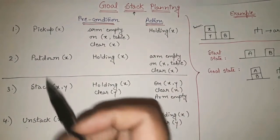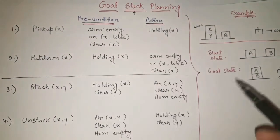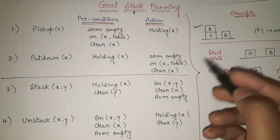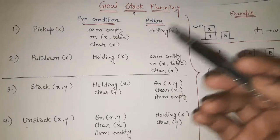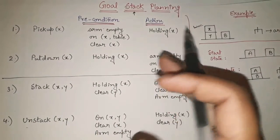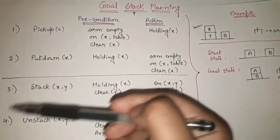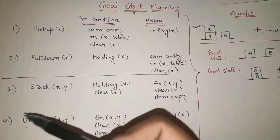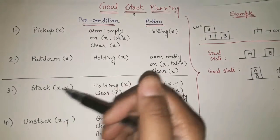Goal Stack Planning — as the name indicates, we will be using a stack. We will have a start state and a goal state, and our aim is to achieve the goal state step by step using a stack. Stack is a data structure that uses last-in-first-out. The main four functions of goal stack planning are: Pick Up, Put Down, Stack, and Unstack.